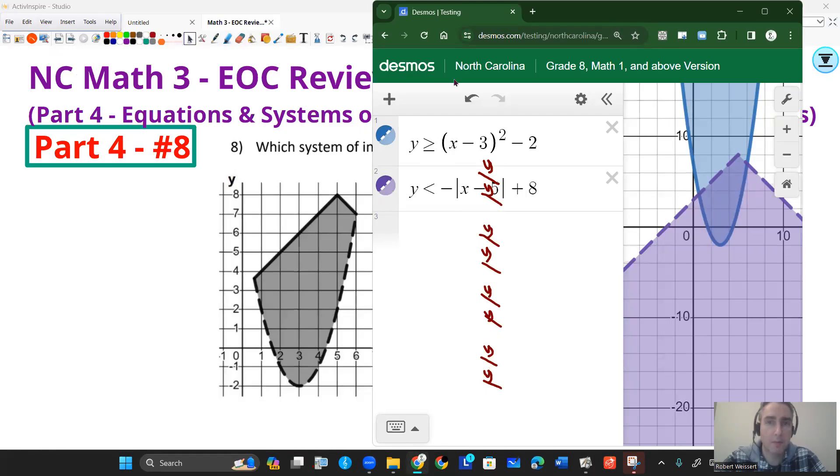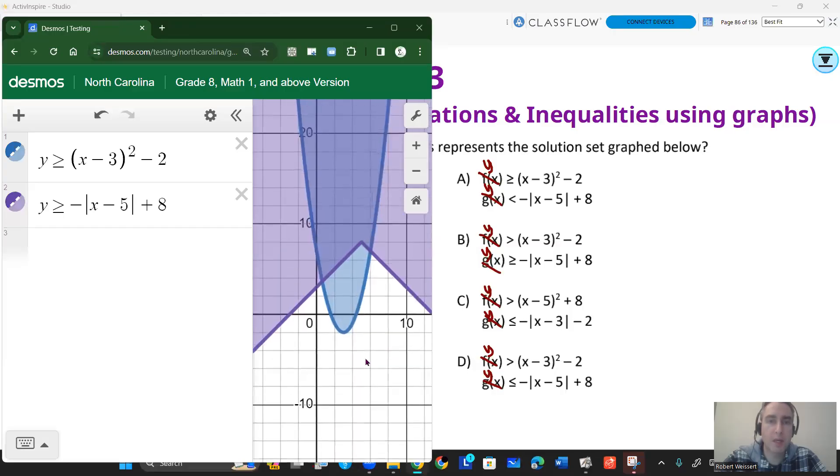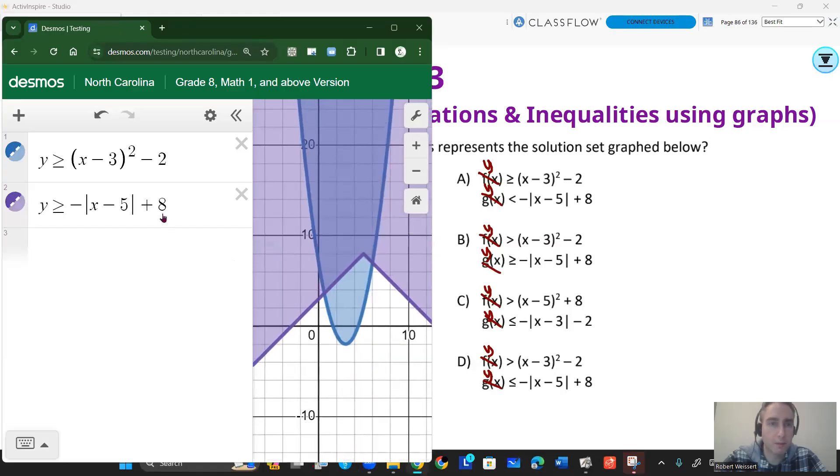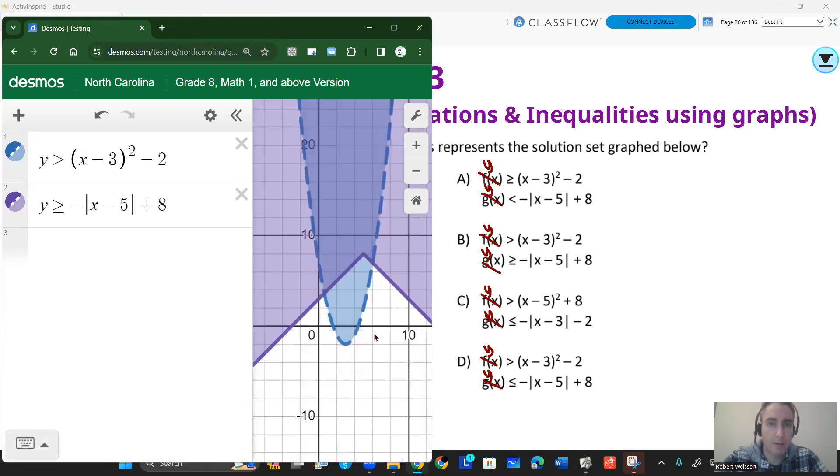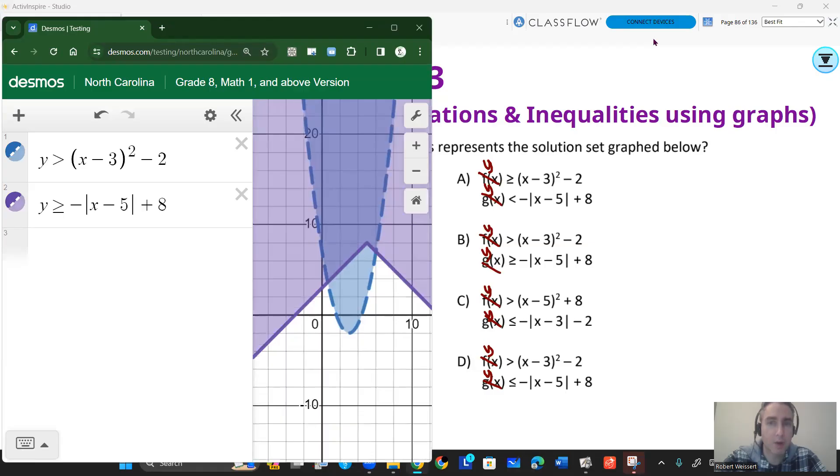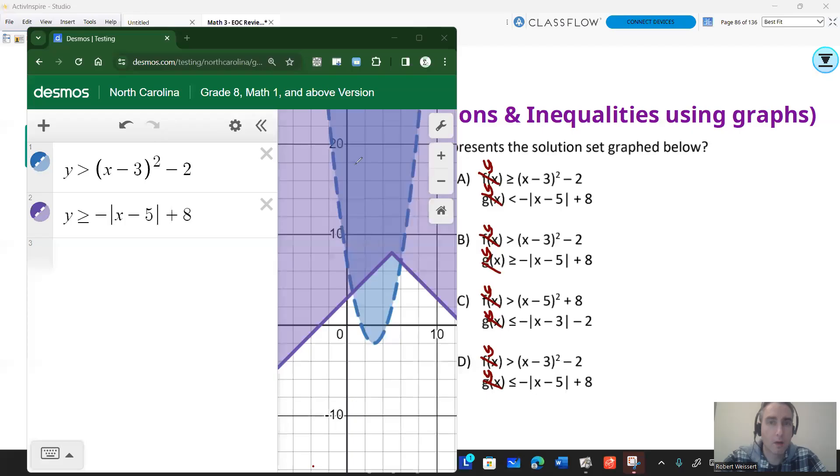Let's look at choice B. With choice B, both of them are going to be... Oops, this is a greater than. I have my dashed and solid lines correct, but the problem is my overlapped region is in this area here, which I want it to be over here, not up here. So that's not going to work.